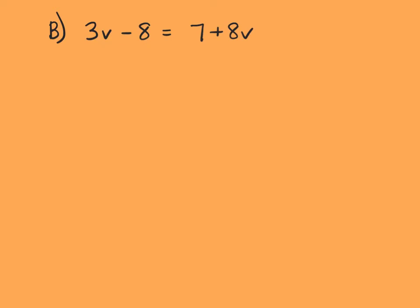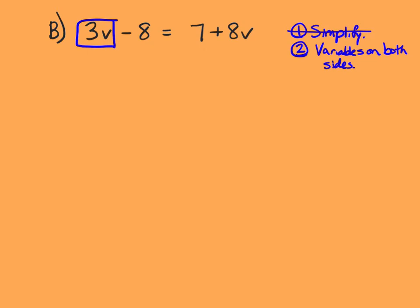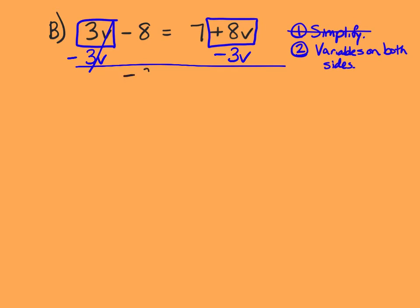Part B, we have 3v minus 8 equals 7 plus 8v. First, I want to see if I can simplify — there's nothing I can do on each side. Second, I'm going to notice there are variables on both sides: 3v on the left and positive 8v on the right. I'm going to get rid of positive 3v by subtracting 3v from both sides. On the left side they cancel, leaving negative 8. On the right, 8v minus 3v is positive 5v. So we've got rid of the variables on both sides.